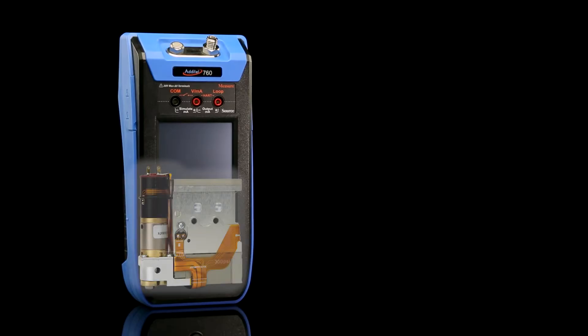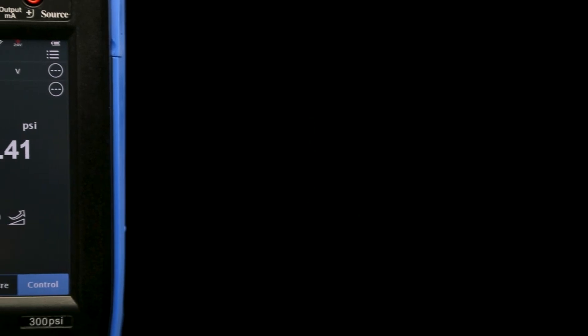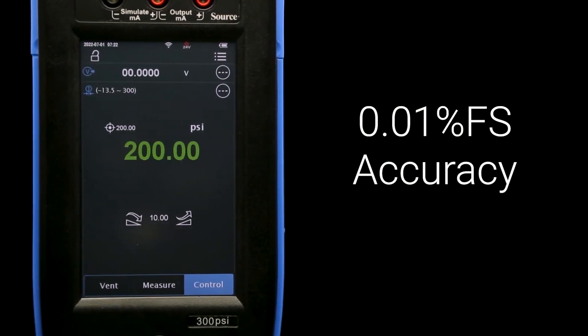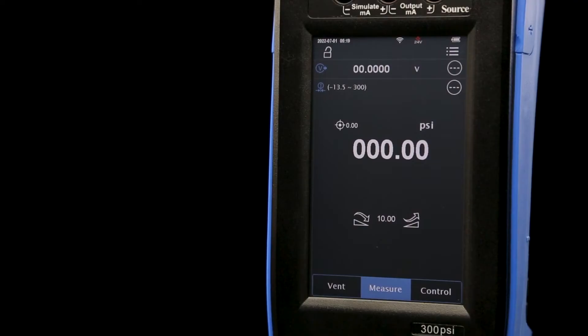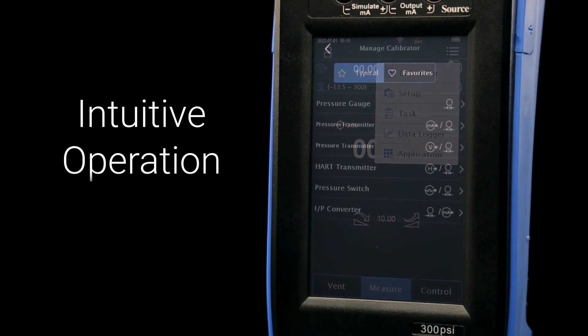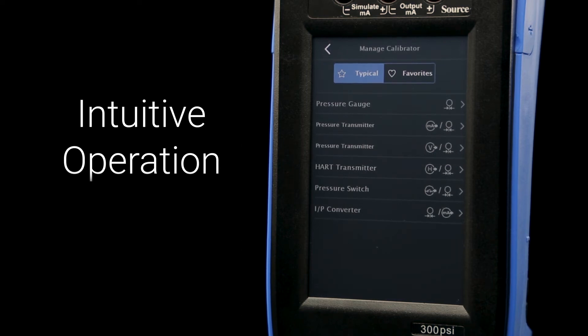Inside the 760 is an automatic pump that quickly cycles to output the pressure entered into the device, with accuracies up to 0.01% full scale. Reference manuals and confusing process setups are a thing of the past with the 760's intuitive touchscreen and modern menu design.